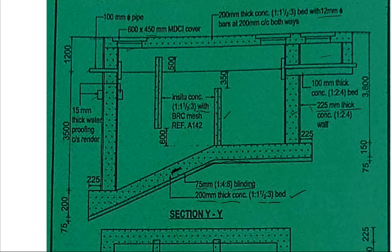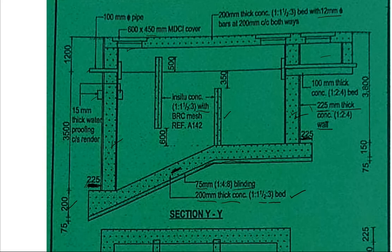The depth of that concrete is 200 millimeters. Coming to the walls, we have a projection here of 225 millimeters — the same on this side, projecting by 225 millimeters. From there we have walls that are 225 millimeters thick, concrete mix 1:2:4.